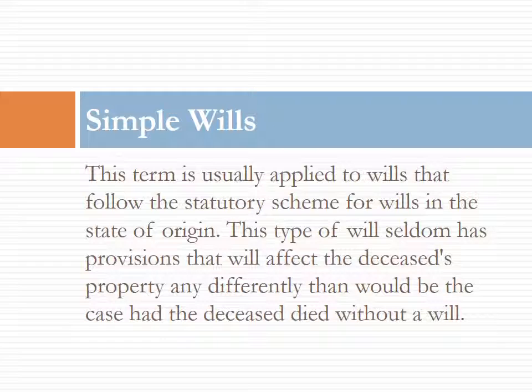There is a term called a simple will, which usually refers to a will that provides for all of the property to go to a surviving spouse, and in the absence of a surviving spouse, to the children in equal shares. As mentioned, this type of will will seldom make a difference as to the way the property is distributed compared to the laws of intestate succession. Usually the main difference is in the percentages of property being given to any one of the possible heirs.